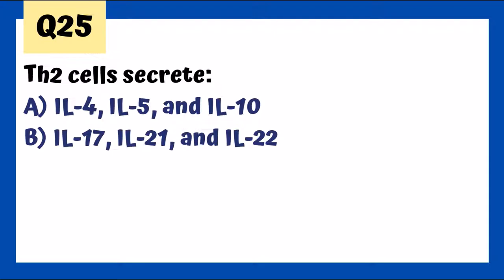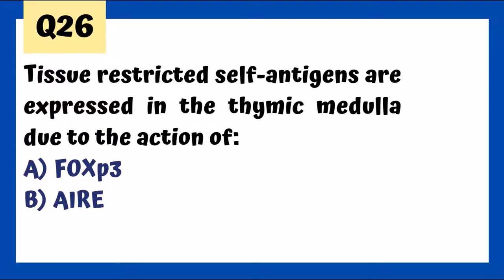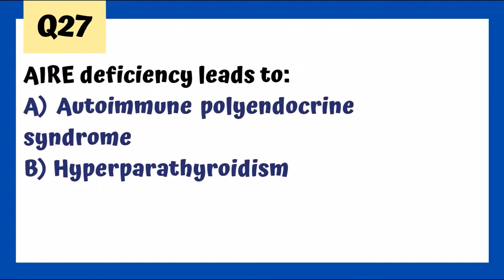Th2 cells secrete IL-4, IL-5, and IL-10. IL-10 is important for immune suppression. Tissue-restricted antigens are expressed in the thymic medulla due to the action of AIRE. AIRE is involved in negative selection — presenting various peptides to T-cells, and those that bind too tightly undergo apoptosis or turn into T-regs.